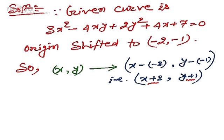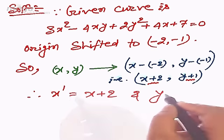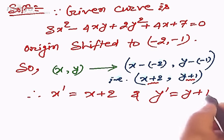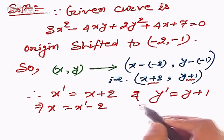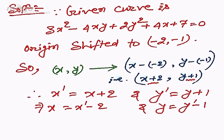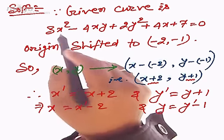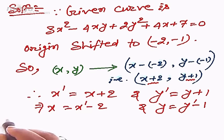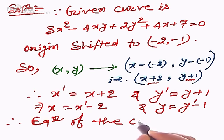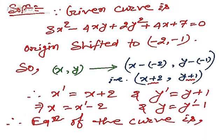We write x' = x + 2 and y' = y + 1. From this, x = x' - 2 and y = y' - 1, because in the new situation the coordinates are x' and y'. We need to rewrite the entire equation in terms of x' and y', so we substitute these expressions into the original equation.